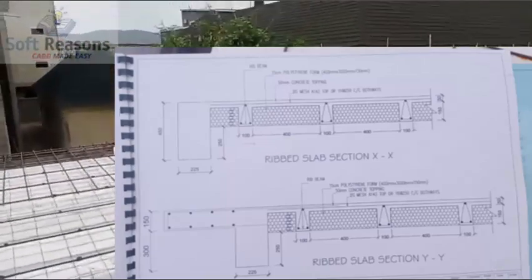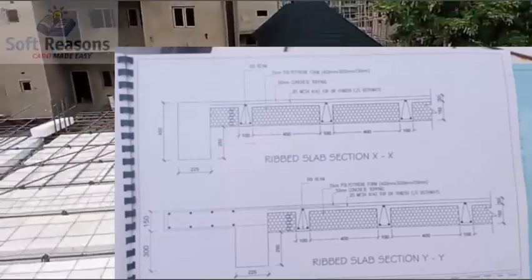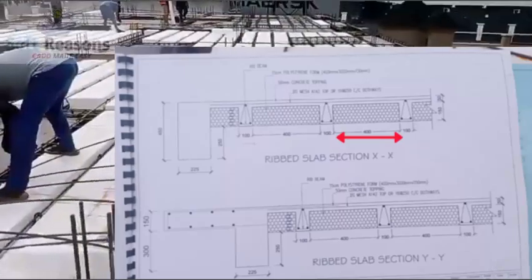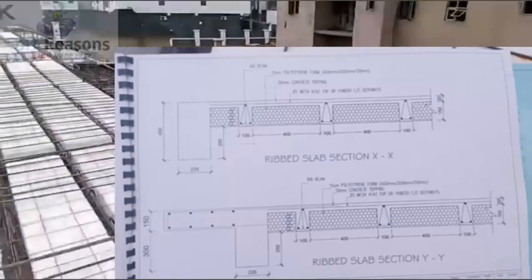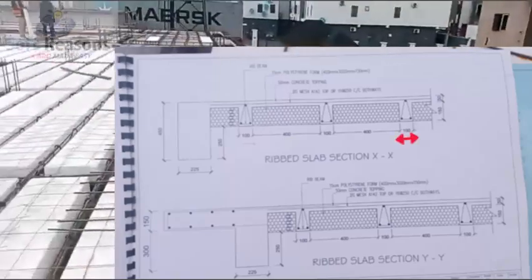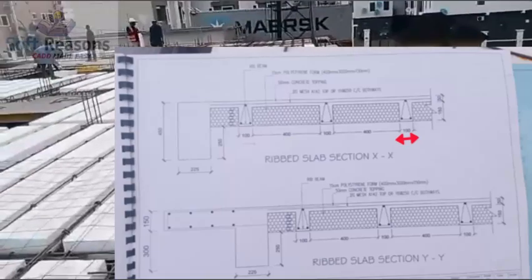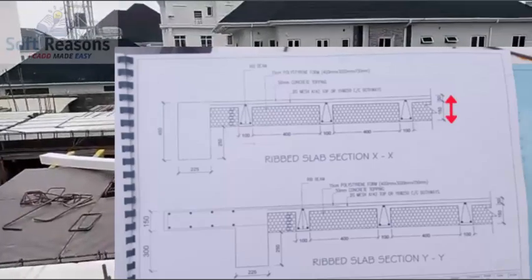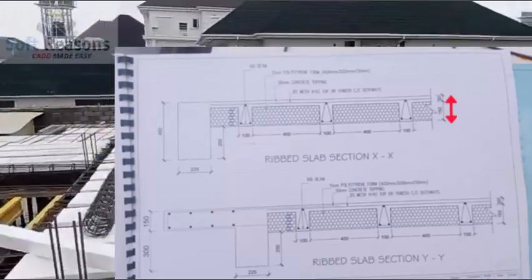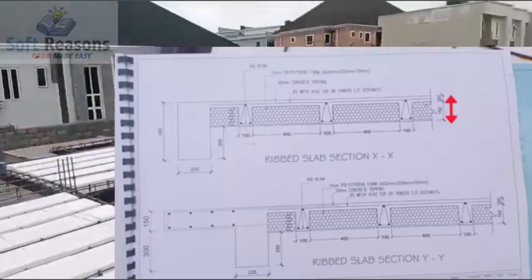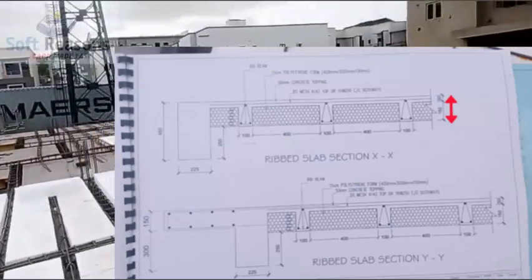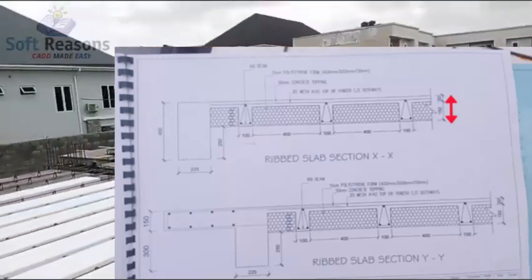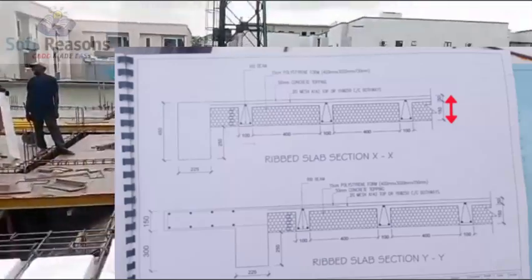The spacing between the rib beams is 400 millimeters, and the width of the rib beam is 100 millimeters while the spacing is 400. The overall depth of the rib slab is 200 millimeters — that is 150 plus 50 millimeters concrete topping — making a total depth of 200 millimeters, which is quite economical.